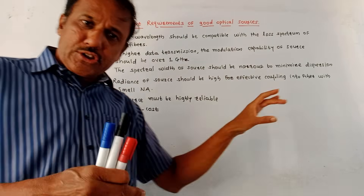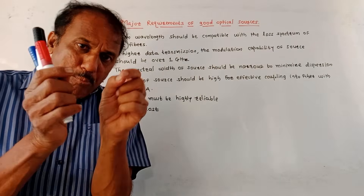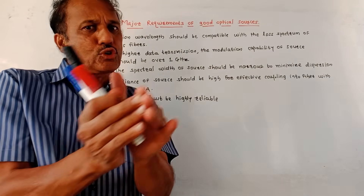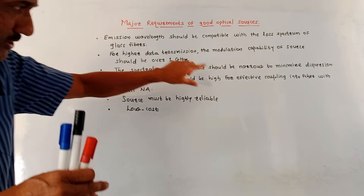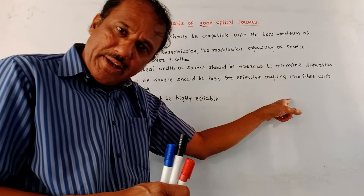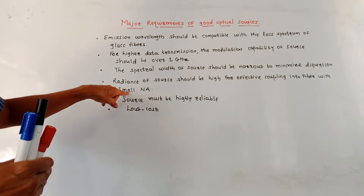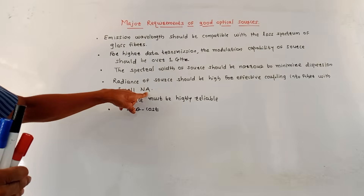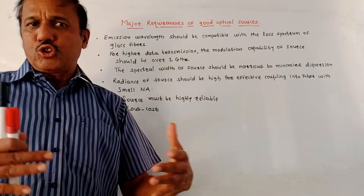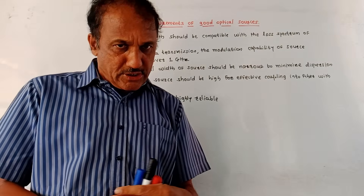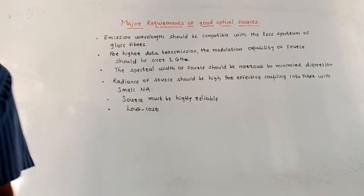The radiance of the source should be as high as possible for effective coupling of the light source to fiber optic cables with small numerical aperture (NA). Additionally, the light source used for the fiber optic communication system should be highly reliable and its cost should be low.